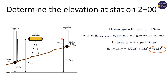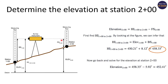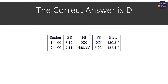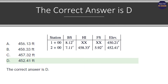Now we're going to subtract from that 458.33 the foresight reading at station 2+00, which was provided as 5.92. That brings you down to your answer of 452.41. That's how easy it is — that's how easy surveying problems can be. Here's the completed table filled out, and from the answer selection you'll see that answer D, 452.41, was the correct answer.